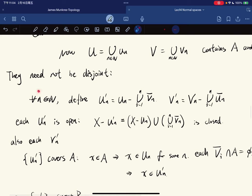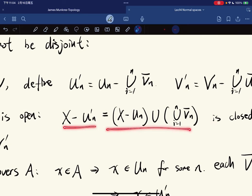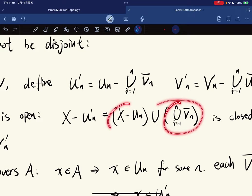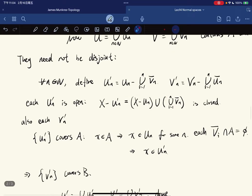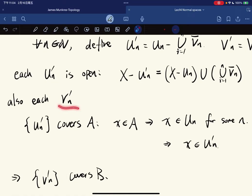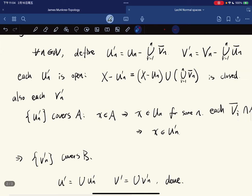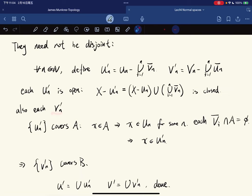So for any n, we define U'_n to be this set and V'_n to be this set. Now each U'_n is open because with this, we have this. Well, it's closed, because this is a closed set, and this is also a closed set. And also for V'_n, we can do the same thing. It is also open.